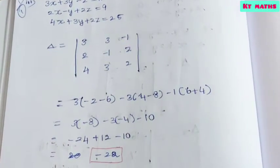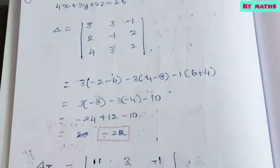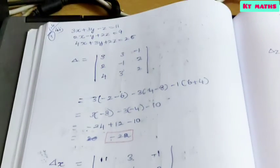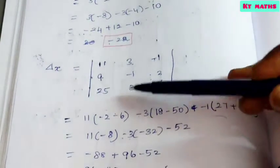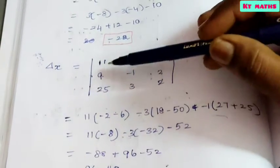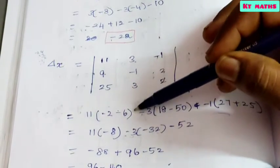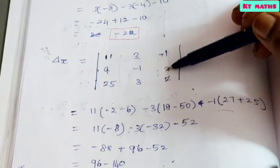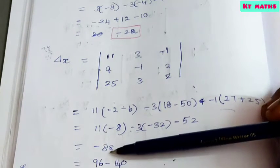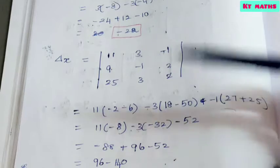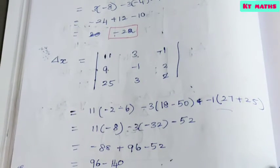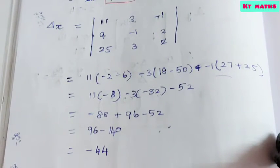Now we find delta x (Δx). For Δx, we replace the x-coefficients with the constants 11, 9, 25. So the first column becomes 11, 9, 25. Expanding: 11 into (−2 − 6), minus 3 into (18 − 50), minus 1 into (27 + 25). This gives 11 into −8 = −88, minus 3 into −32 = plus 96, minus 1 into 52 = −52.